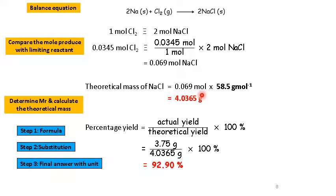So let's check the answer. Equation is step 1 given. Now we compare 1 mol of chlorine. We must compare with chlorine because chlorine is the limiting reactant. Equivalent to 2 mol of sodium chloride. So 0.0345 mol chlorine, stoichiometry times 2 divided by 1. So that mol is 0.069 mol sodium chloride.